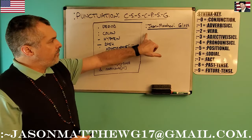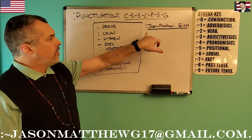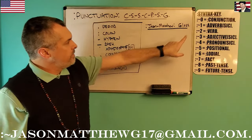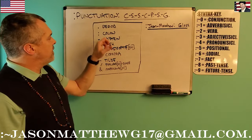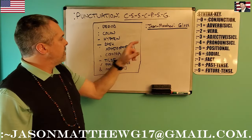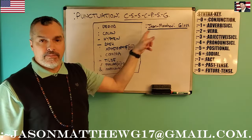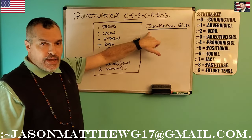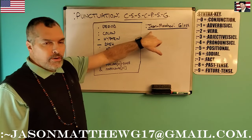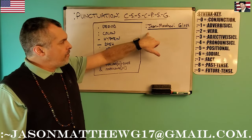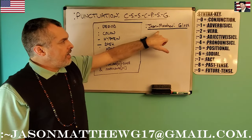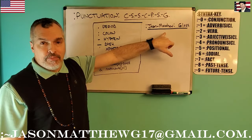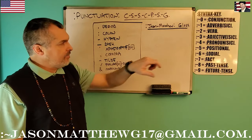So you see here, I've written out my name, my correct name: colon Jason-Matthew colon glass. I've used the period, the colon, and the hyphen. This colon, because it's tied up against the J, represents 'for the.' The positional odial is set for the. Jason-Matthew — the hyphen connects Jason and Matthew, which are both sevens, together to form one seven.